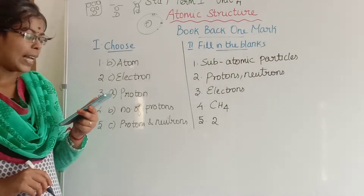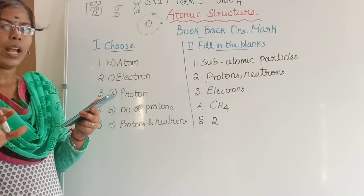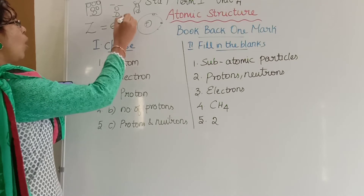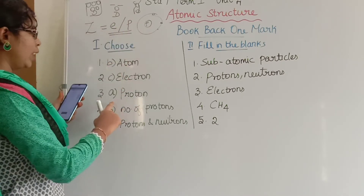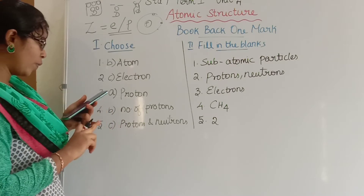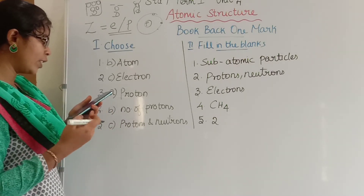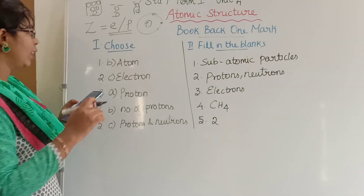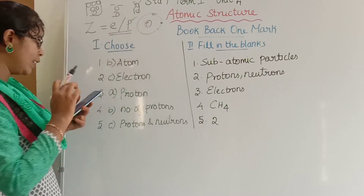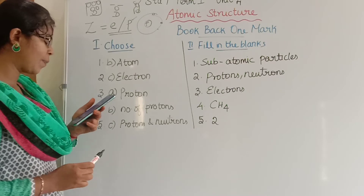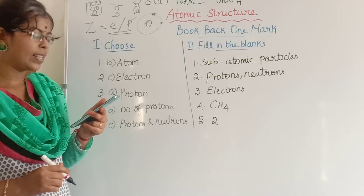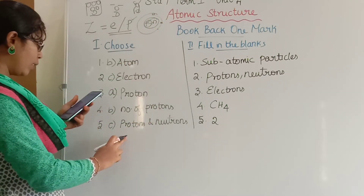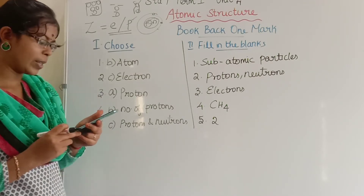Fourth question: the atomic number of an atom is — represented by the symbol Z — which is equal to the number of electrons or protons. The options are: A, number of neutrons; B, number of protons; C, total number of protons and neutrons; D, number of atoms. The total number of protons and neutrons are called nucleons. The answer is option C, protons and neutrons.